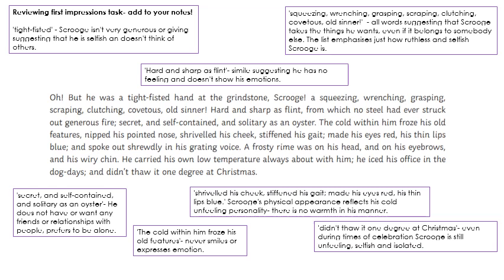At the top there: 'tight-fisted,' 'squeezing,' 'wrenching,' 'grasping,' 'scraping,' 'clutching,' 'covetous old sinner' — all words suggesting that Scrooge takes the things he wants even if they belong to somebody else. The list emphasises just how ruthless and selfish Scrooge is. 'Hard and sharp as flint' — this is a simile suggesting he has no feeling and doesn't show his emotions. 'Shrivelled his cheeks, stiffened his gait, made his eyes red, his thin lips blue' — Scrooge's physical appearance reflects his cold, unfeeling personality; there is no warmth in his manner. 'Didn't thaw one degree at Christmas' — even during times of celebration, Scrooge is still unfeeling, selfish and isolated. 'The cold within him froze his old features' — never smiles or expresses emotion. 'Secret and self-contained and solitary as an oyster' — he does not have or want any friends or relationships with people; he prefers to be alone. Add those to the notes that you've got and then go on to the next slide.